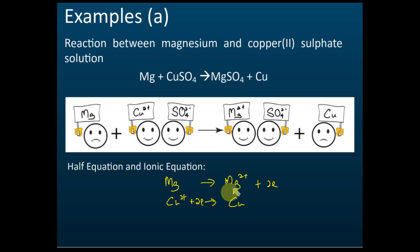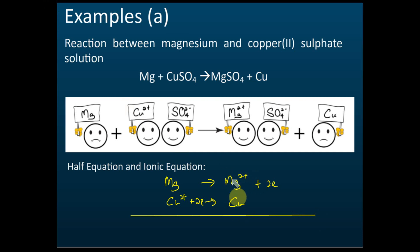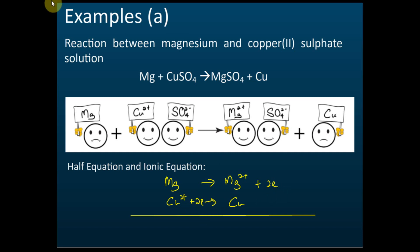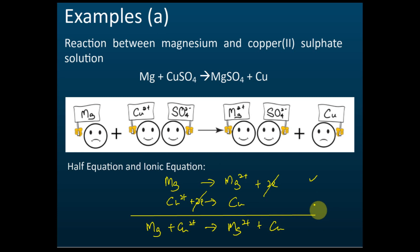After writing the half equations, we write the ionic equation by combining the two half equations. Before combining, we must ensure the electrons on the left-hand side equal the electrons on the right-hand side. In this case it is already balanced — two electrons on each side. So we can combine them directly: Mg + Cu²⁺ gives Mg²⁺ + Cu. We don't include the electrons because they cancel out. That is how we write the half equations and ionic equation.